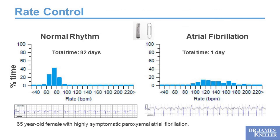Here's what rate control looks like on a cardiac monitor. A 65-year-old female with highly symptomatic paroxysmal atrial fibrillation, implanted with the Link monitor, shows heart rates of 70 to 80 beats per minute in normal rhythm over 92 days — a very healthy active profile. However, during atrial fibrillation she spent most of her time above 110, even reaching 140 beats per minute. That is poor rate control, indicating significant work is needed to slow her heart during atrial fibrillation.